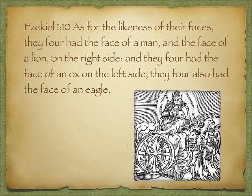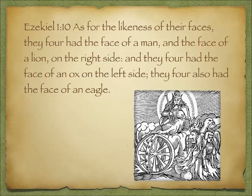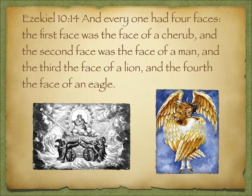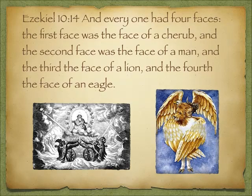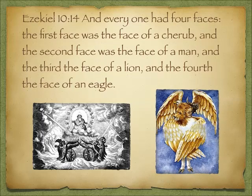There is another place where we see these four figures: around the throne of God, as testified by Ezekiel in chapter 1 verse 10. 'As for the likeness of their faces, they four had the face of a man, the face of a lion on the right side, they four had the face of an ox on the left side, and they four also had the face of an eagle.' In Ezekiel chapter 10, the cherub is listed instead of the ox — one speculation is that the angle from which Ezekiel was looking allowed him to see three faces, but the four faces all together make up the cherub.